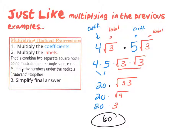To summarize: we multiplied the coefficients — 4 times 5 gave us 20. We multiplied the labels — root 3 times root 3 was root 9, which we simplified to 3. Then we simplified the final answer: 20 times 3 is 60.